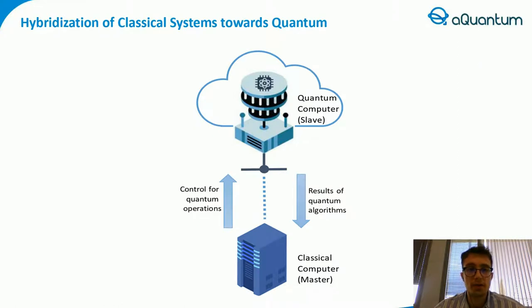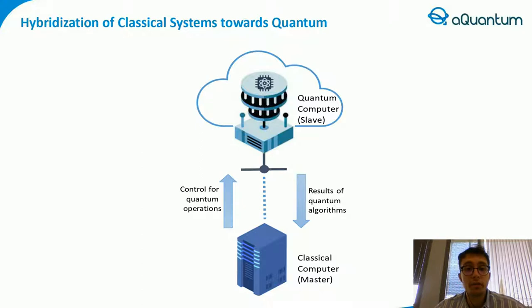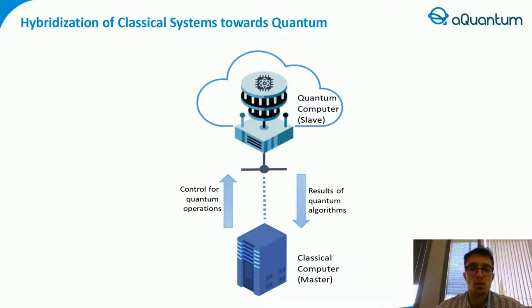Our predictions about how different organizations will take advantage of this paradigm will be through hybrid systems, where companies will migrate some mission-critical functionalities to quantum software, while other new functionalities are still implemented in classical software. This approach will transform classical information systems into hybrid information systems.